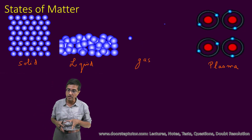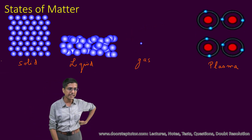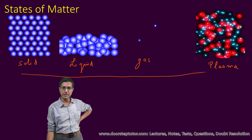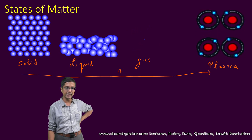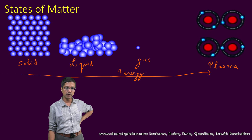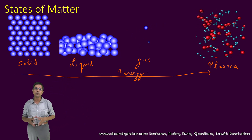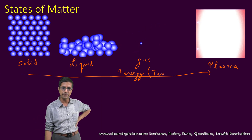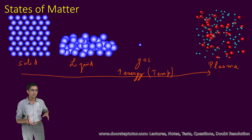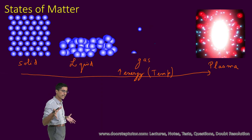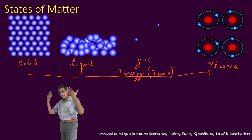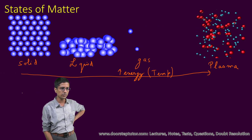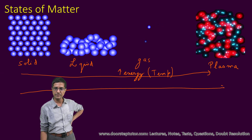Plasma also occurs quite frequently on Earth, and we will see how to actually create plasma. One of the things we need to go from solid to liquid to gas is increasing energy — the energy of the particles increases as we give them more and more energy, typically in the form of temperature. As we increase the temperature, the same material goes from solid to liquid, then liquid to gas, and finally from gas to plasma. The amount of randomness also increases as we go from solid to liquid to gas to plasma.